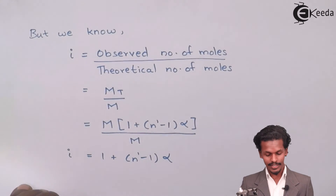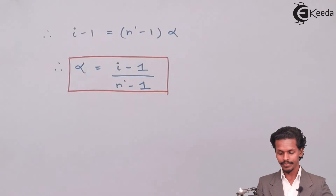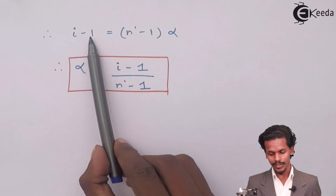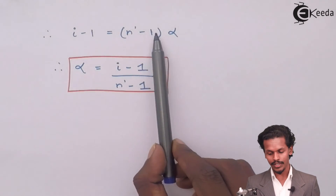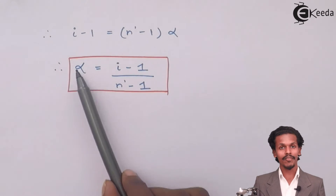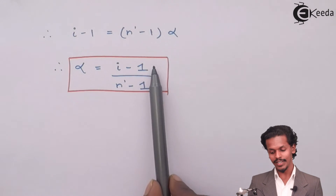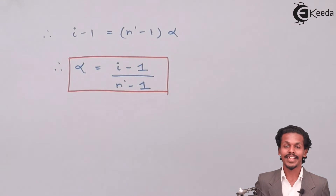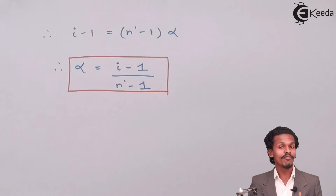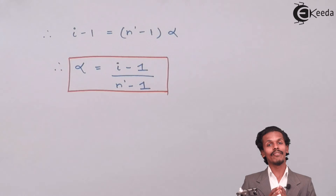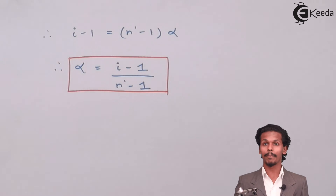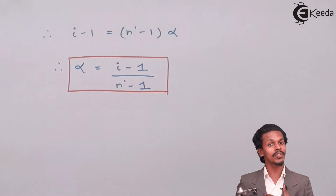Rearranging this equation: i − 1 = (n̄ − 1)·α. Therefore, the degree of dissociation α = (i − 1) / (n̄ − 1). This is the equation we have derived — the relation between the Van't Hoff factor and the degree of dissociation for an electrolyte in solution that undergoes dissociation.